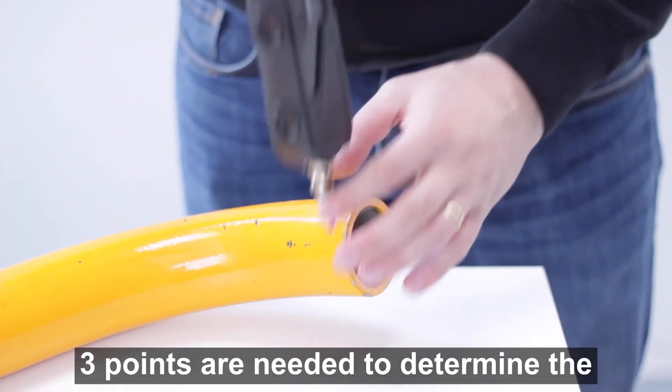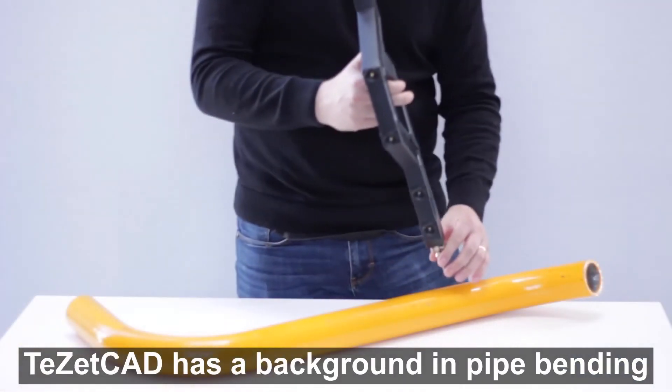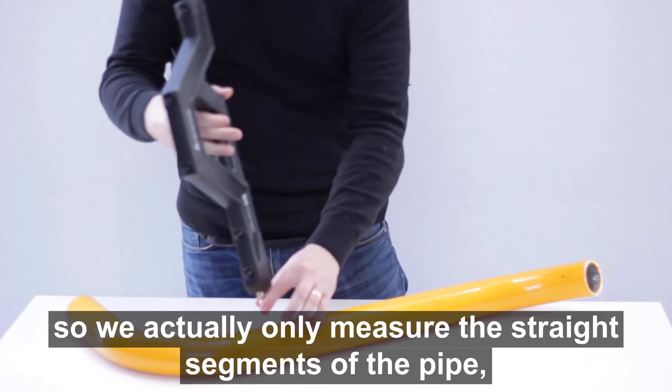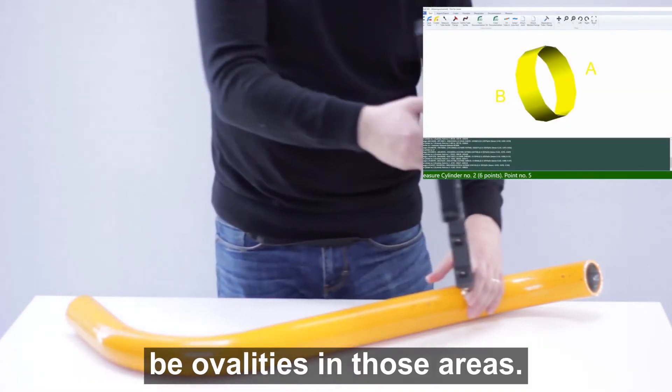Three points are needed to determine the orientation of the pipe connection plane. TsetCat has a background in pipe bending, so we actually only measure the straight segments of the pipe, not the bends itself, since there might be ovalities in those areas.